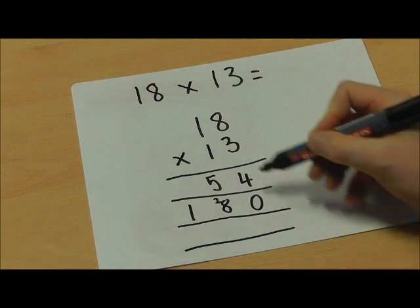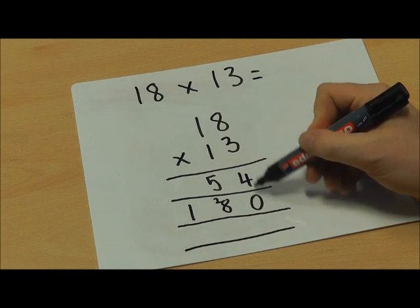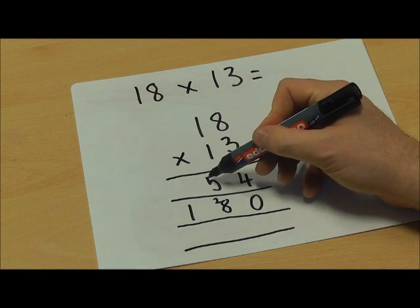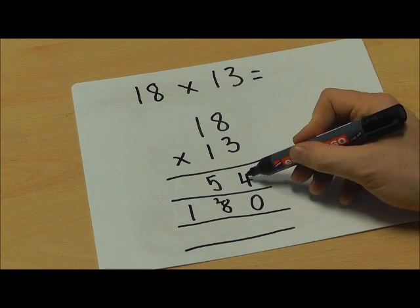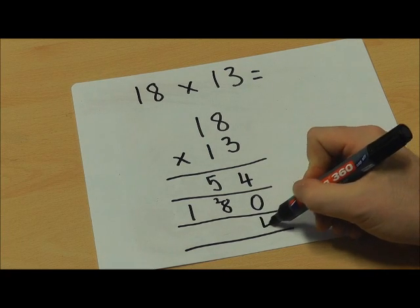The final stage is to use column addition to add up your two answers. So to add 54 and 180. So I'm going to do 4 add 0 equals 4.